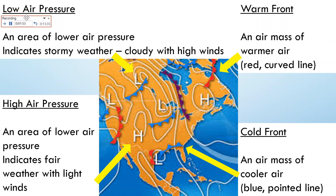Low air pressure — that's where you see the L's. Low air pressure is an area of lower air pressure and it usually indicates stormy weather: it's going to be cloudy and you're going to have some high winds. High air pressure — that would be your H's. Anywhere you see an H, that's an area of higher air pressure, which indicates fair weather with light winds.